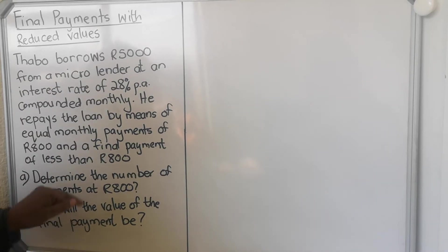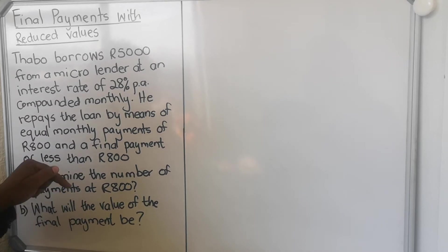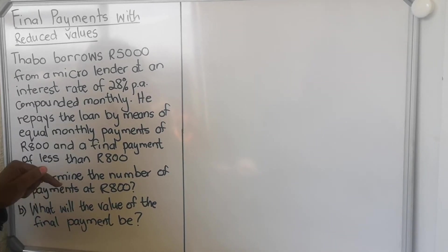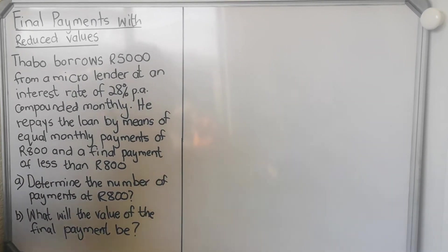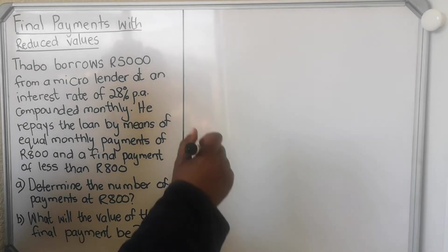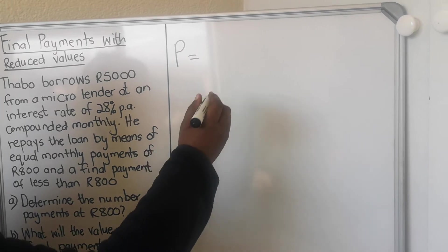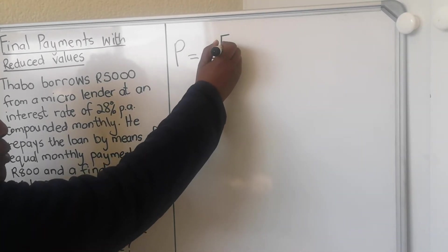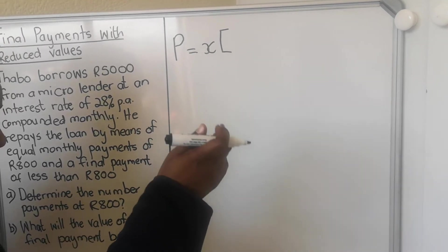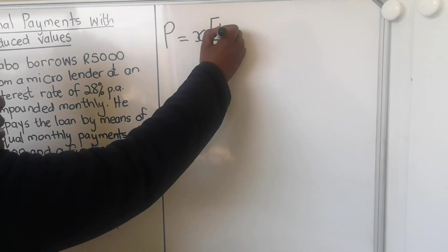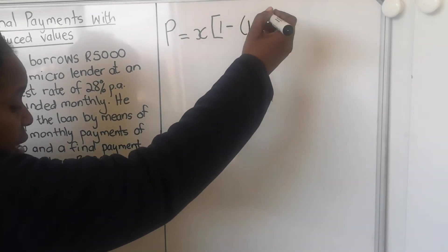So this one, Thabo borrows - he needs the R5000 now. He needs this R5000 in the present, the money that he doesn't have. So we're going to use the present value formula. Take your formula sheet, look at the formula sheet. The present value has a P for present. Please, Grade 12s, don't write the formula sheet from your head. Your head is not functioning correctly. You are writing exams, you'll be very tired. Look at the formula and write the formula from the formula sheet. I'm writing it from the formula sheet as well now.